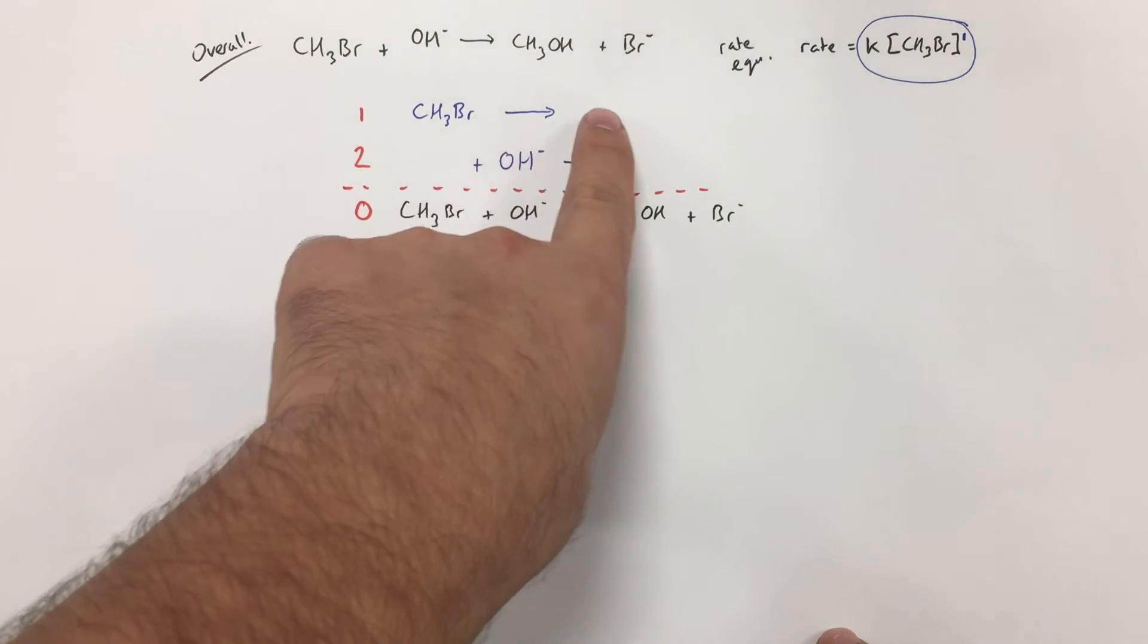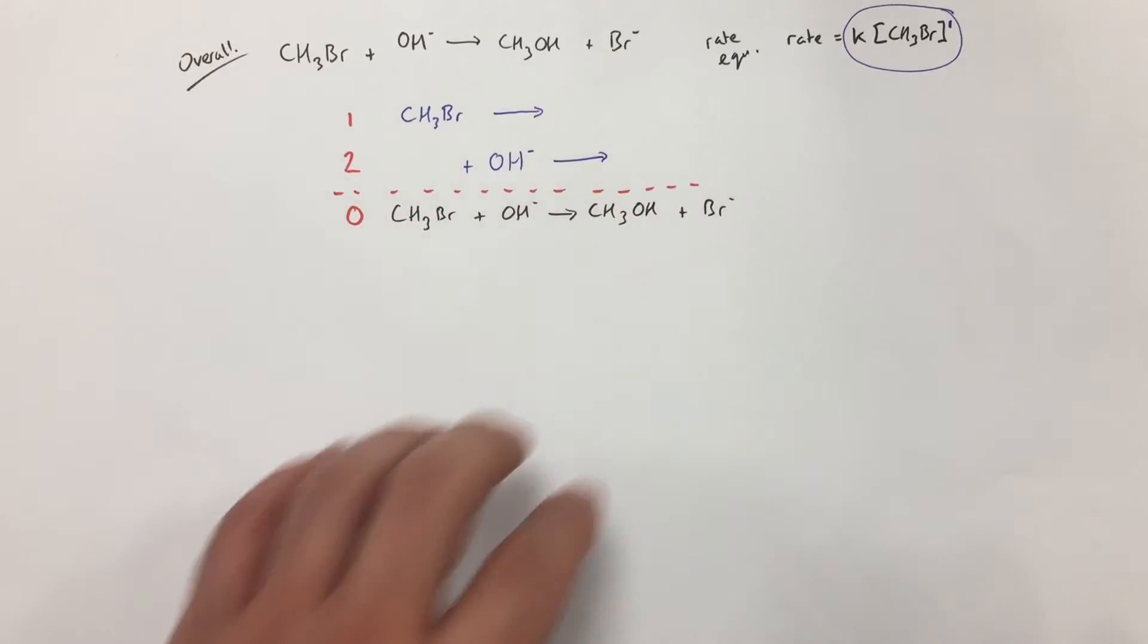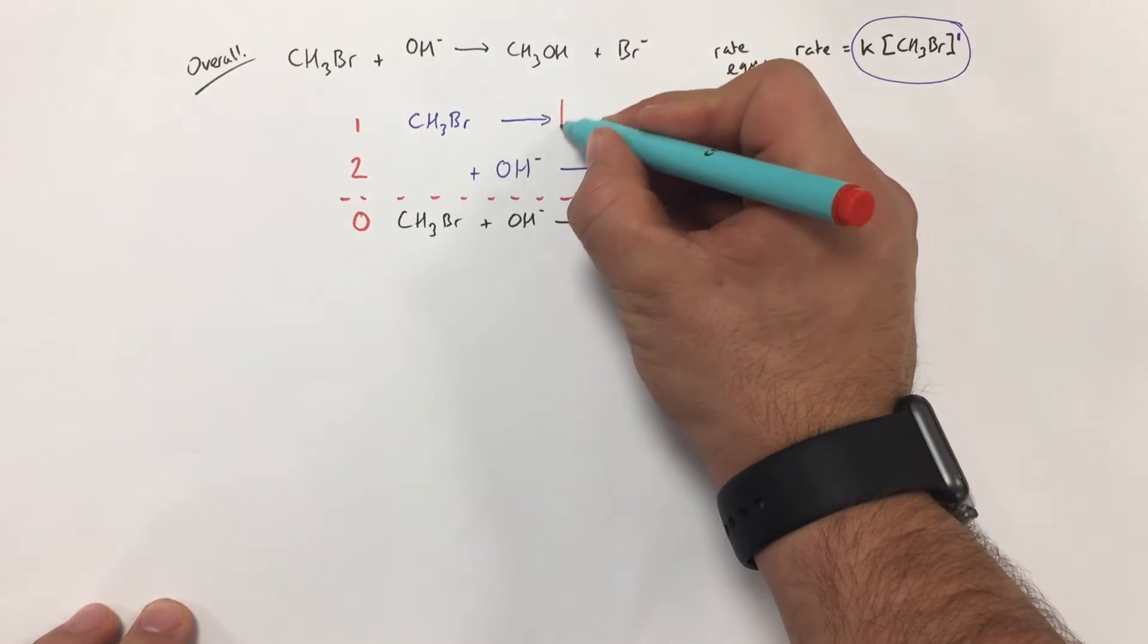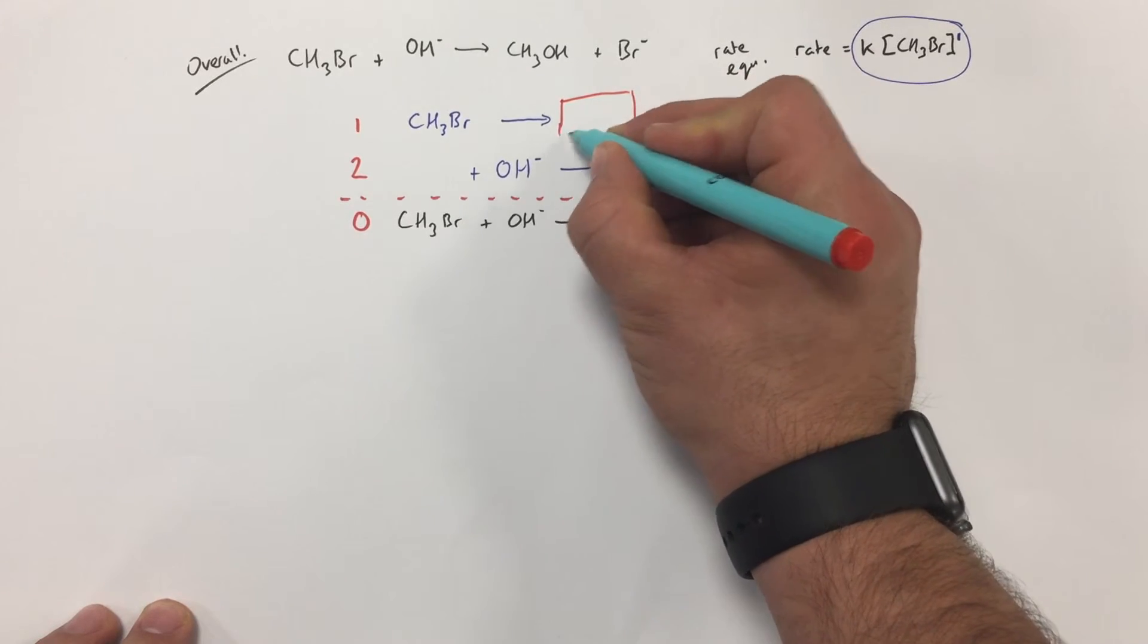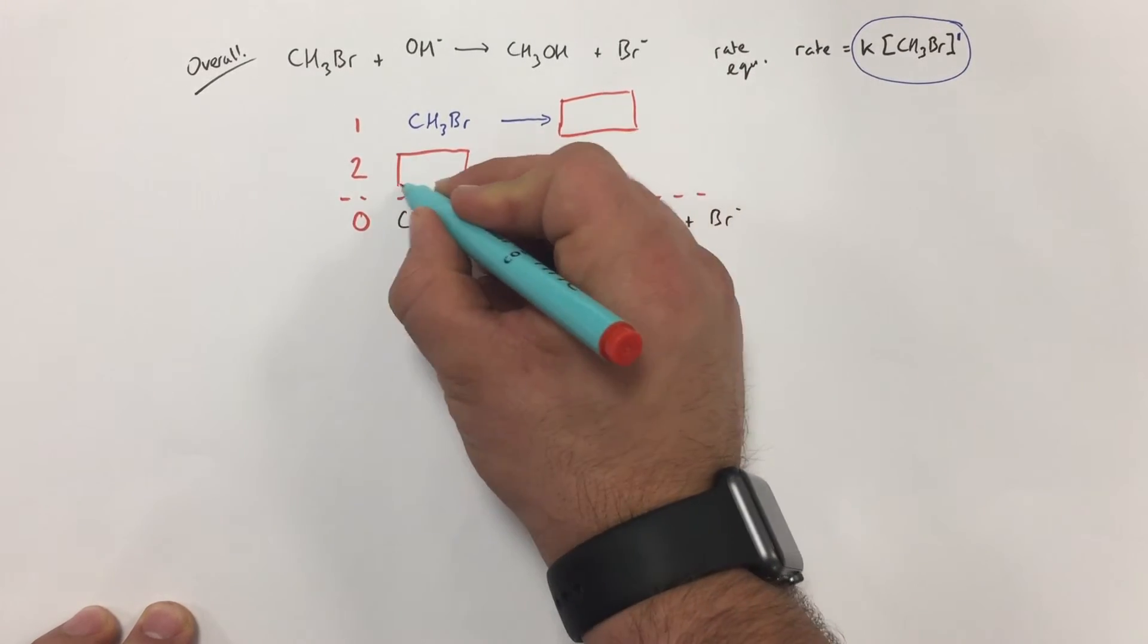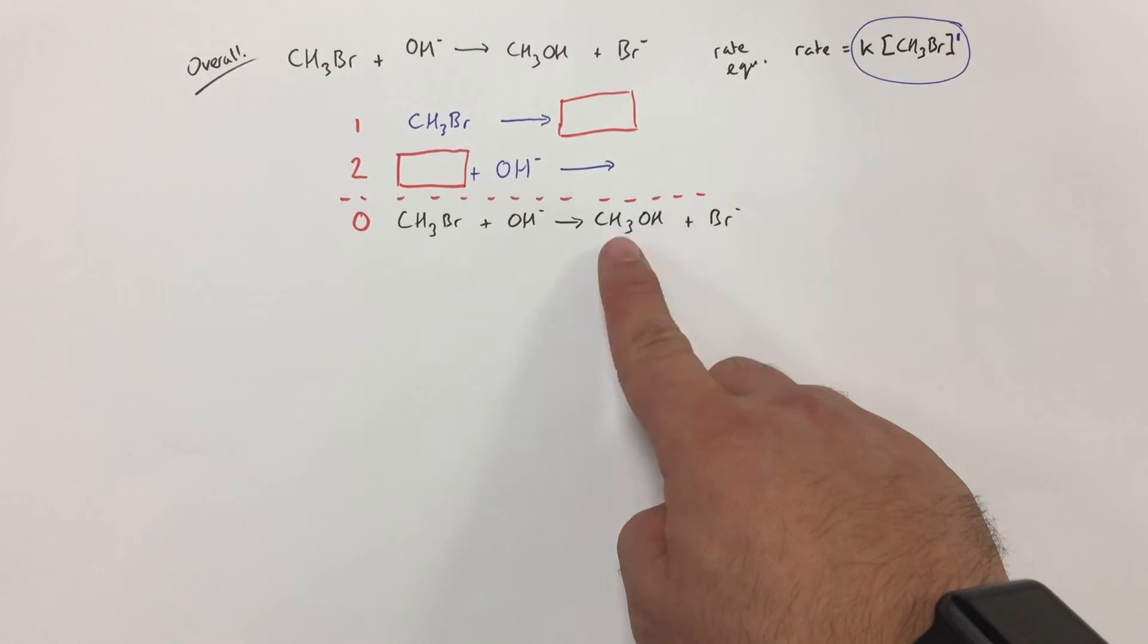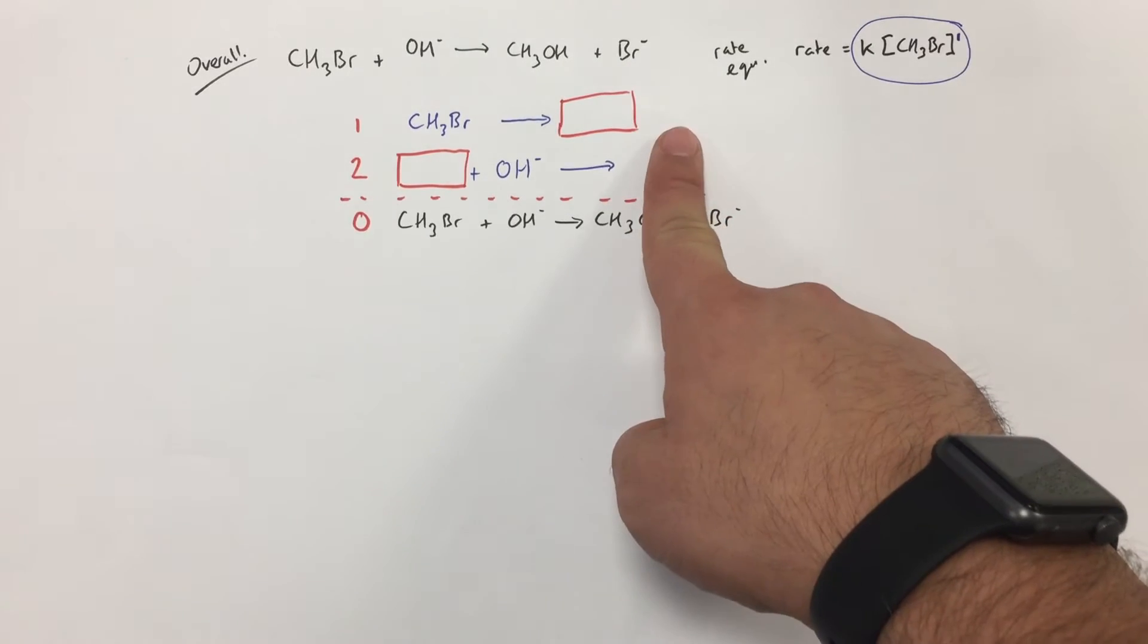Now I'm going to have an intermediate formed in this first step that then has to be used up again in this step. What's useful to do at this point is to check to see which of the products is possibly going to be formed here.